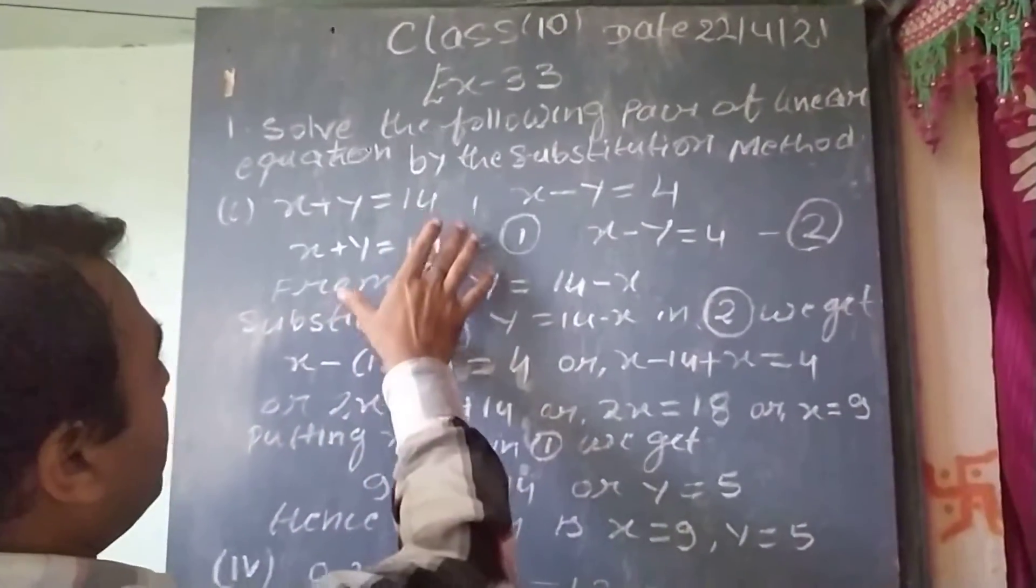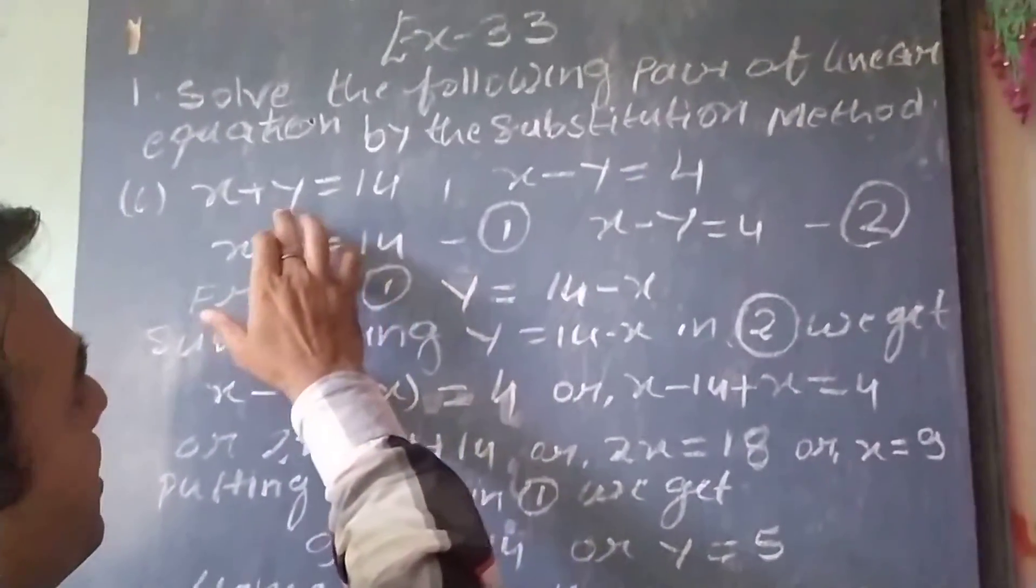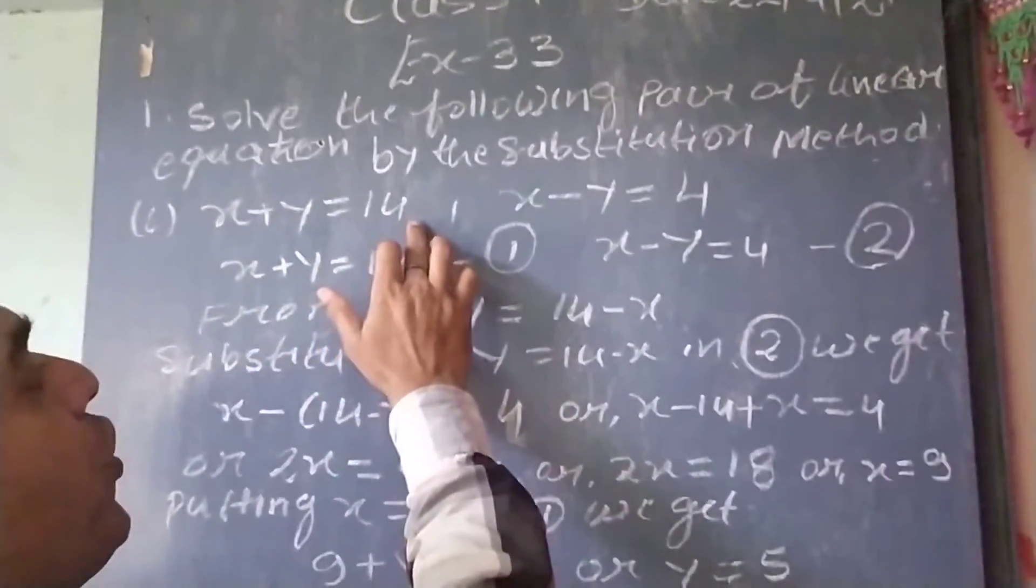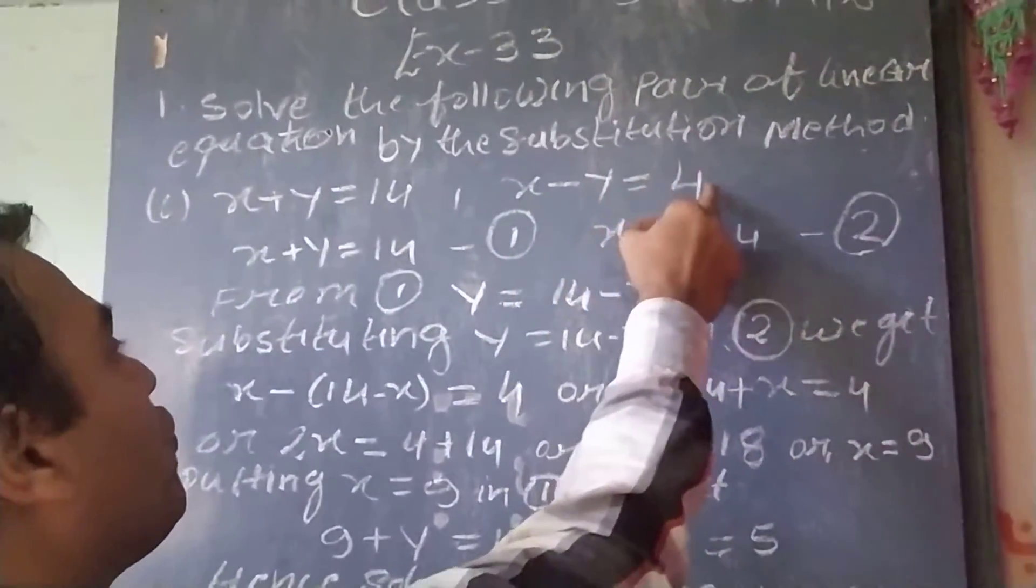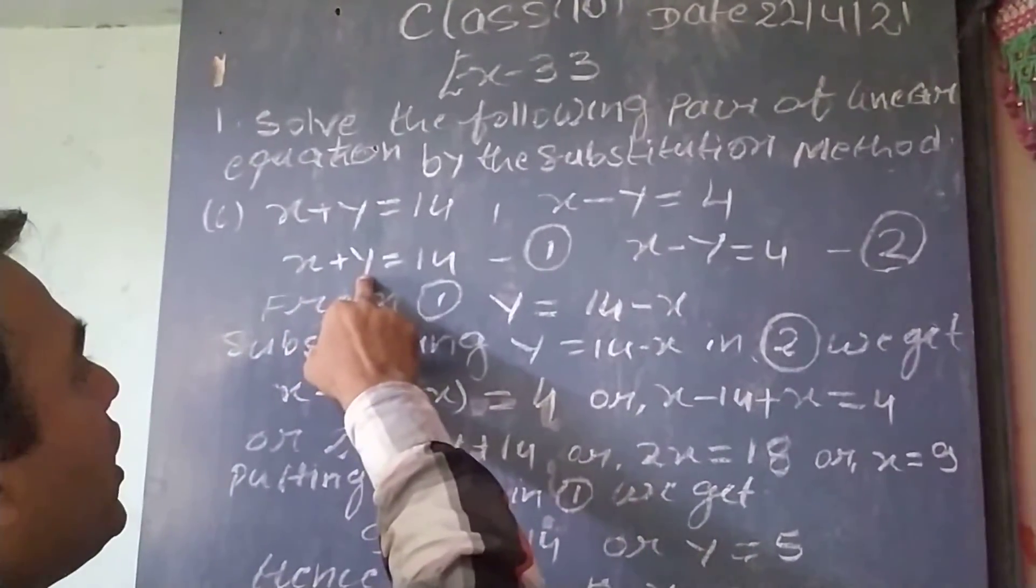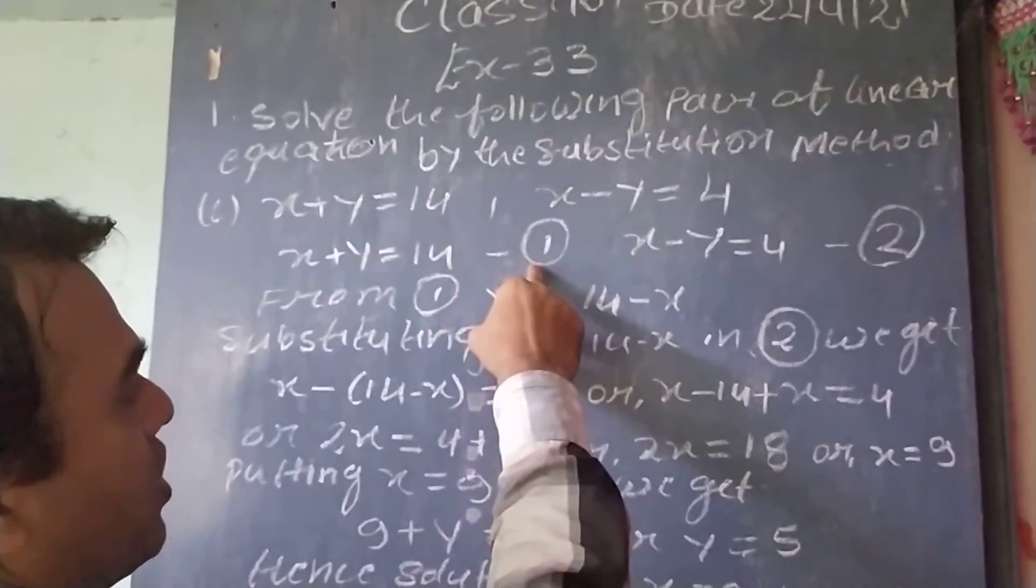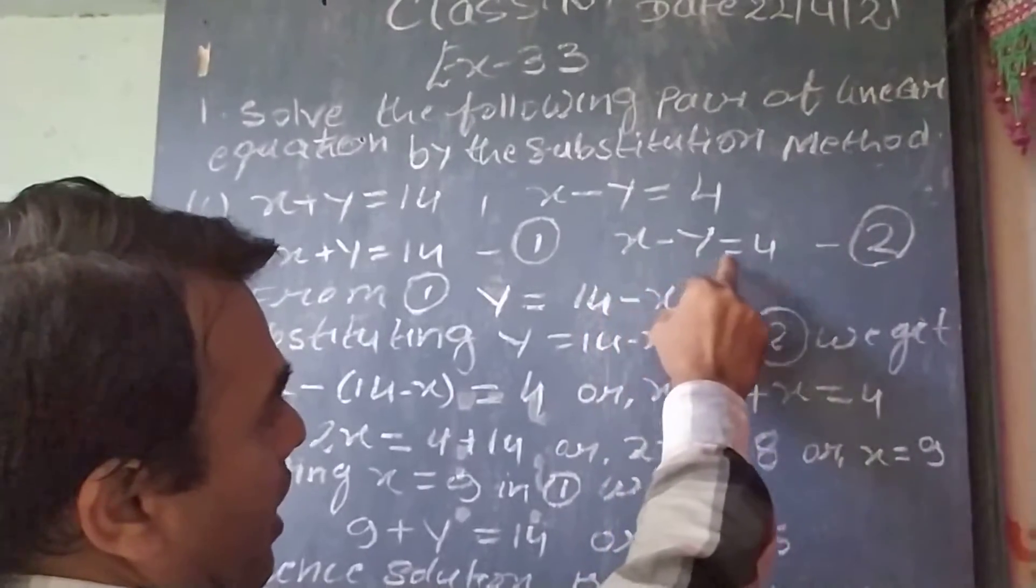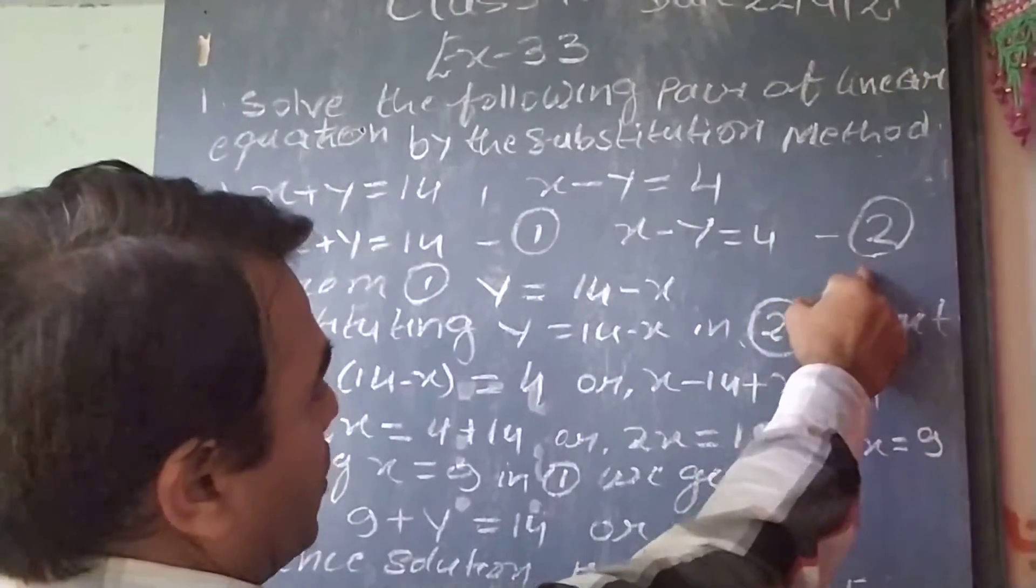Here we have to solve the problem of two equations: x plus y equal to 14 and x minus y equal to 4 by substitution method. So, x plus y equal to 14, equation 1. x minus y equal to 4, equation 2.